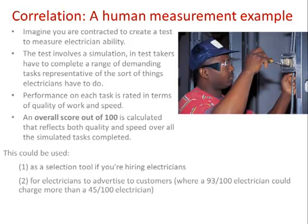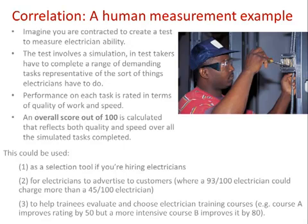If you're a self-employed electrician wanting to advertise to customers, you show them your score — say, 93 out of 100 — meaning you can charge more than a competitor who only scored 23. Also, if you're a trainee choosing which electrician course to go on, these evaluations would be useful for comparing training courses. One course might improve the score by 50 points, another by only 20 points — so you'd choose the one that improves it by 50 points.